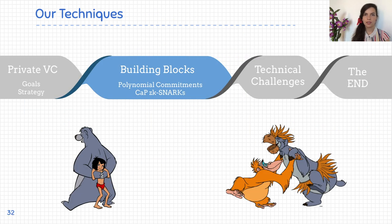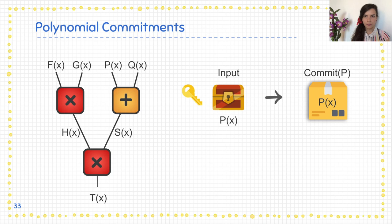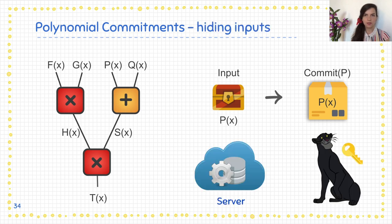Our techniques and building blocks are polynomial commitments and commit-and-prove zero-knowledge snarks. Polynomial commitments are compact and binding — meaning one committed value cannot open to two different polynomials — and also hiding, so the commitment gives no information about the underlying polynomial. This is important for the verifier who has the decryption key: the verifier should not learn the polynomials which are the ciphertexts, in order to achieve privacy of the inputs.